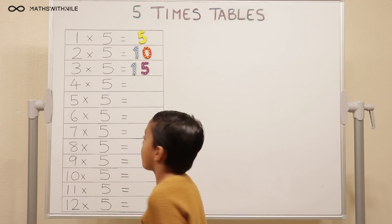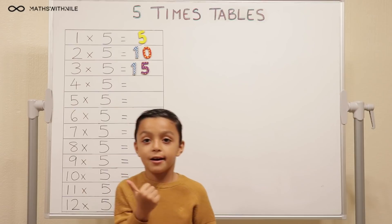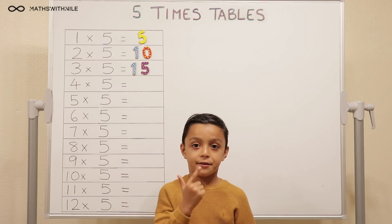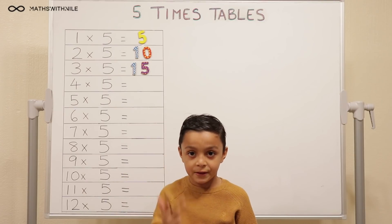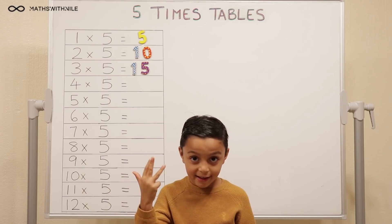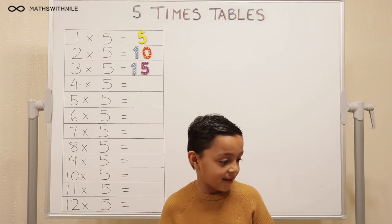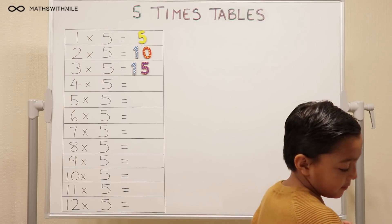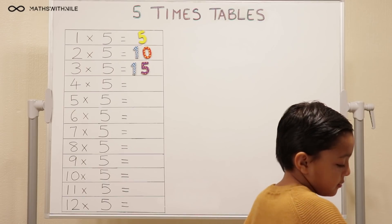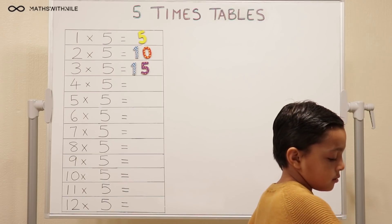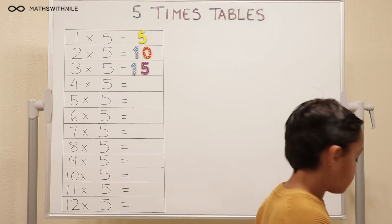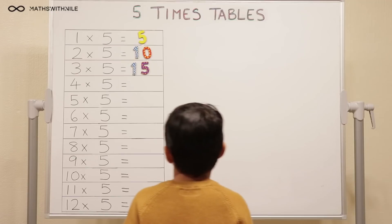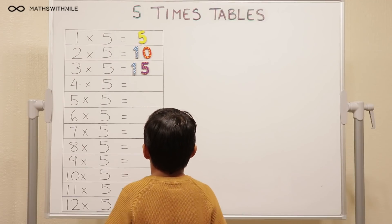Four times five. Five, ten, fifteen, twenty. Very good, so you've used four fingers and you've counted up in fives. Four times five equals twenty.